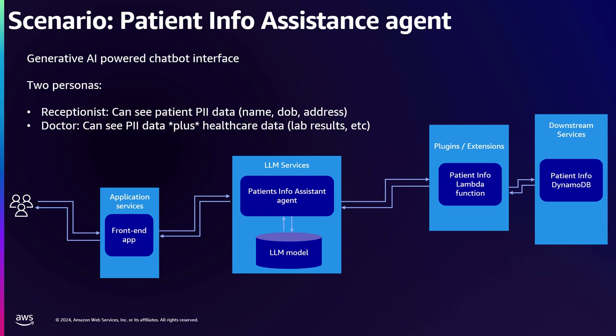In our notional scenario, we're going to have two personas. We have a bot with two personas: one is a receptionist, who should be able to see personally identifiable information about patients — they need to schedule appointments, know addresses, phone numbers, names, etc. And then we have a doctor persona, who needs to know not just PII data but also things like lab results and vital signs.